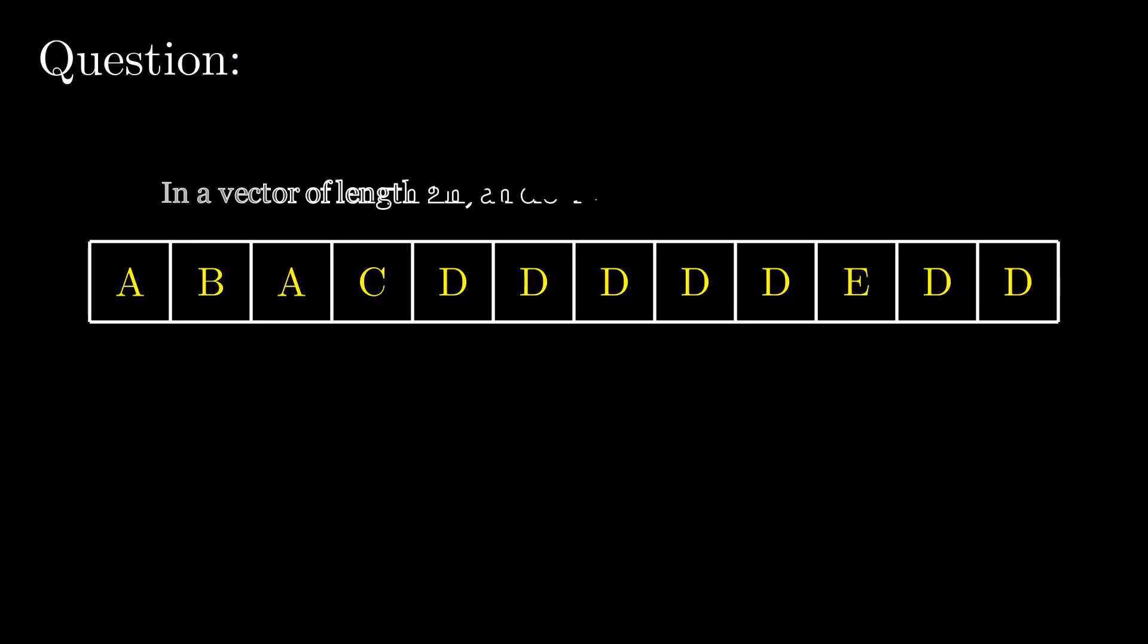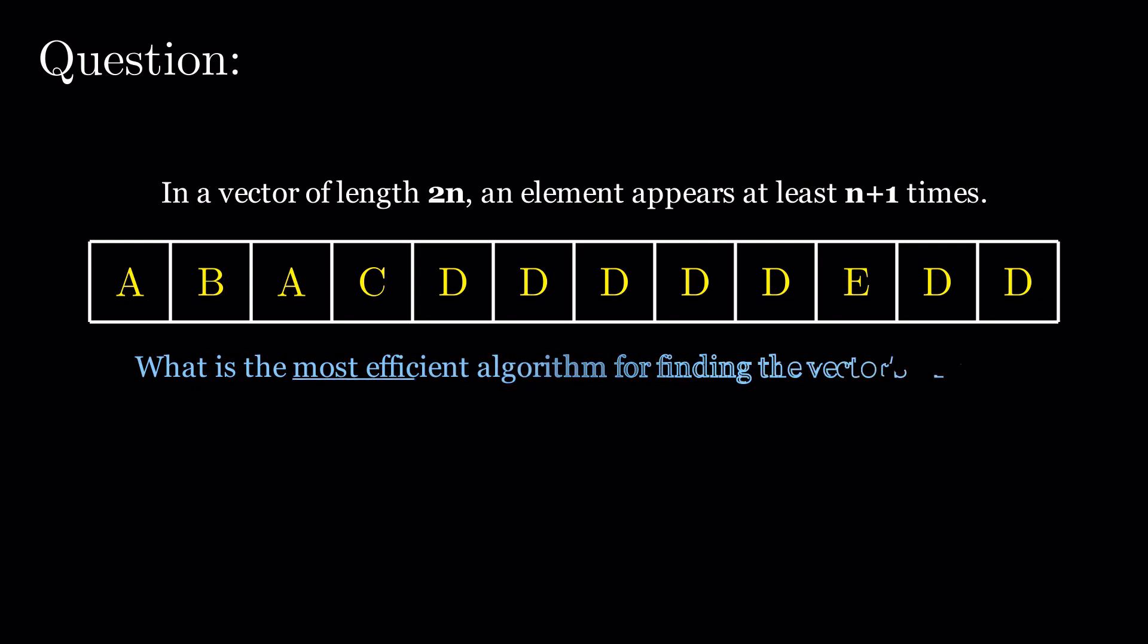In a vector of length 2n, an element appears at least n plus 1 times. What is the most efficient way of finding the vector's mode? You should take 10 minutes and think about how you would proceed with answering this question, and I'll see you back here with a solution.